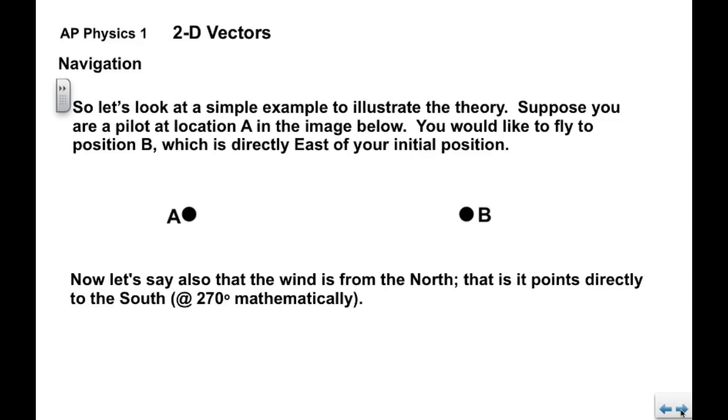Now we'll look at a simple example to illustrate not only the theory but what these terms mean. Suppose you're a pilot at location A and you want to fly to position B, which is directly to the east of A. So you want the plane to go this way. And we will say that the wind is from the north, that is it points directly to the south, or it's at 270 degrees.